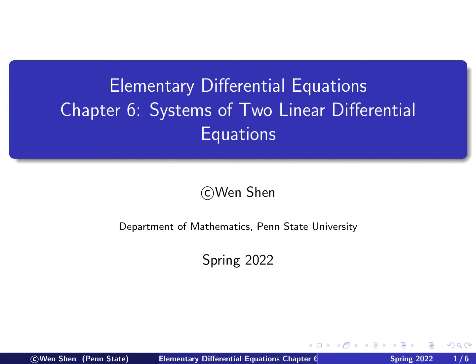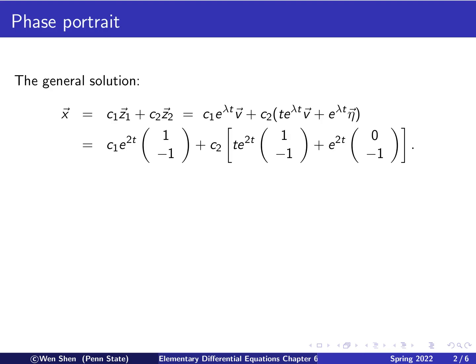Hello everyone. Welcome to my videos on elementary differential equations. This is video number 12 for chapter 6. The topic is systems of two linear differential equations. In the previous videos, we considered the case where we have two repeated real eigenvalues and we derived the general solution, for both the case where there exists one eigenvector or two.